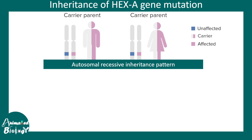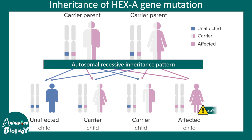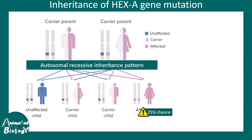The inheritance pattern of the hex A mutation, or Tay-Sachs disease, is autosomal recessive. That means if both parents are carriers, there is only a 25% chance that the next generation will have one affected child. There could also be carrier children who might propagate the disease in subsequent generations.